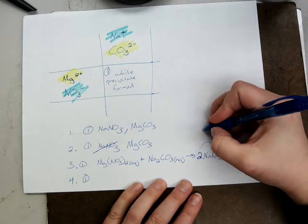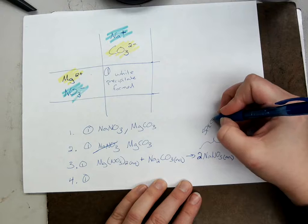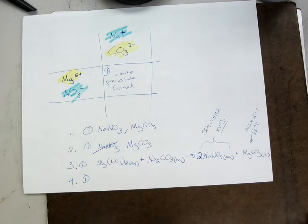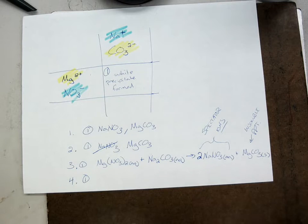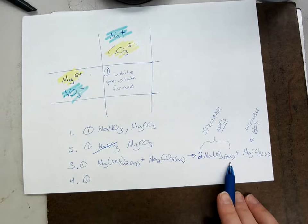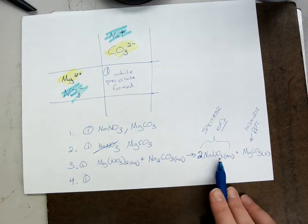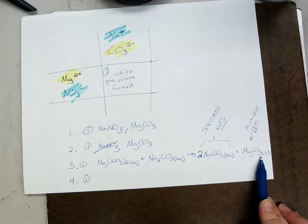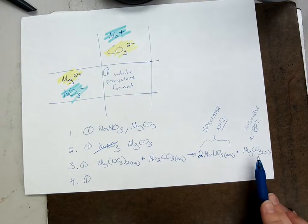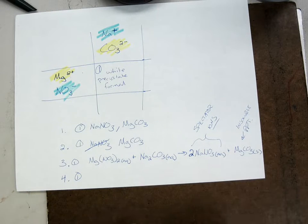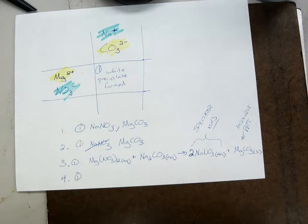They are what we call spectator ions. They don't play in the game. They just hang out on the sidelines and watch the reaction. They're floating in the water. It looks like we made them bond together here, but we didn't because they're aqueous. In reality they're floating around in the water separately. Only the magnesium and the carbonate bonded together. So only they are going to be in the net ionic equation.